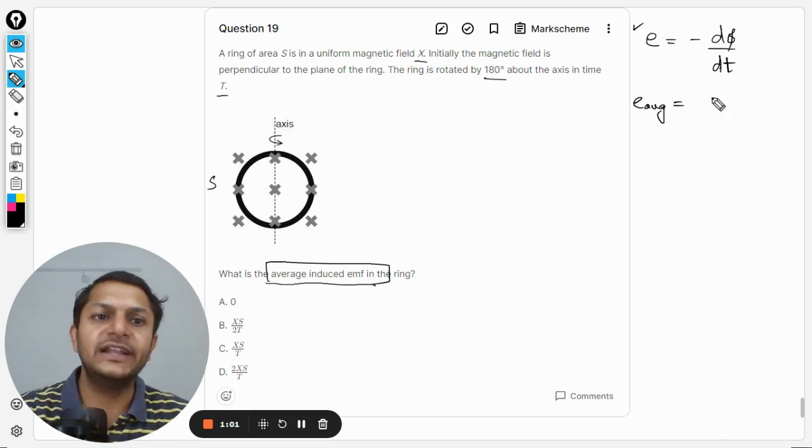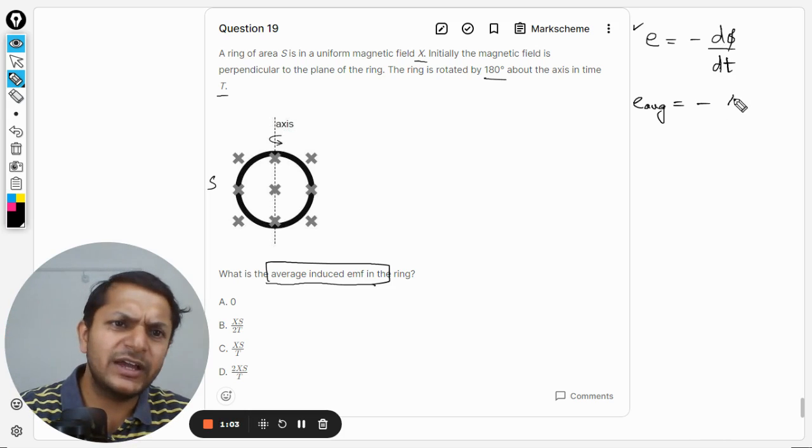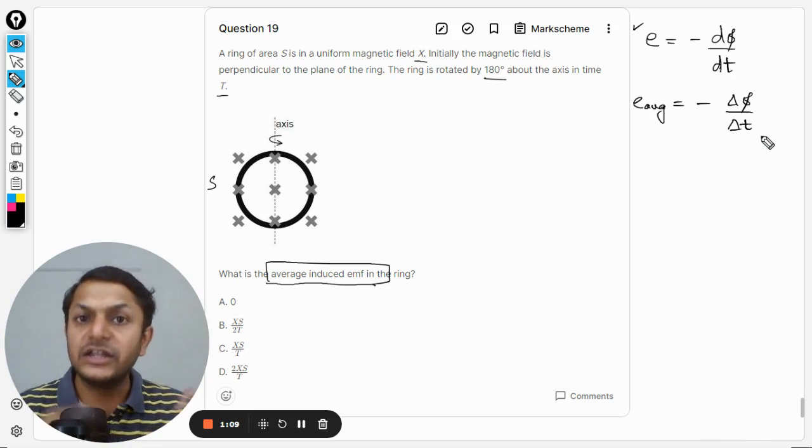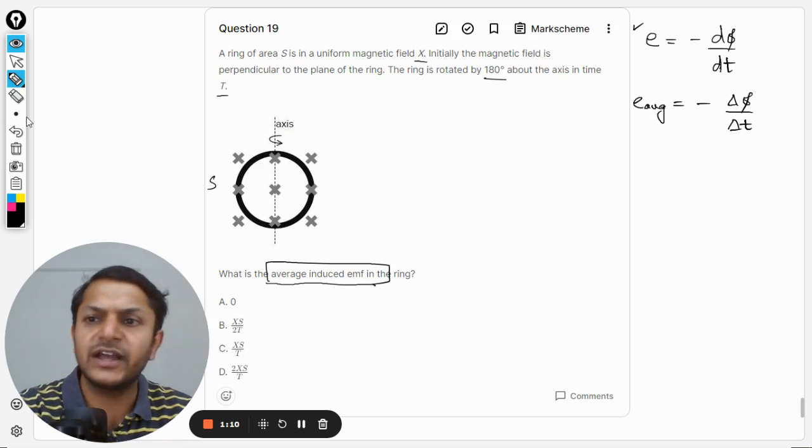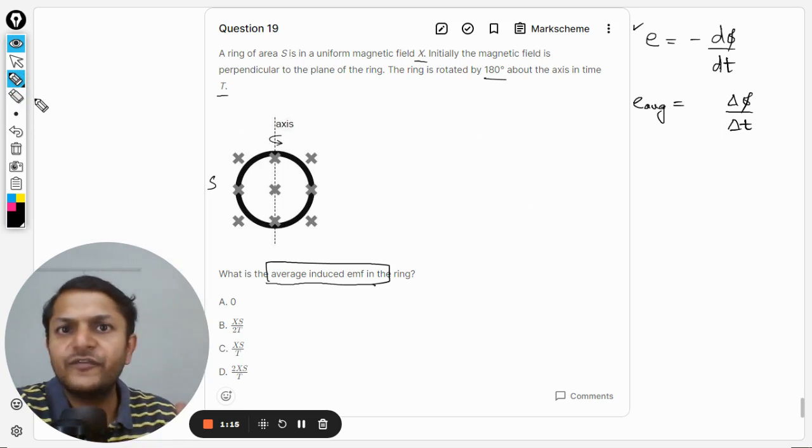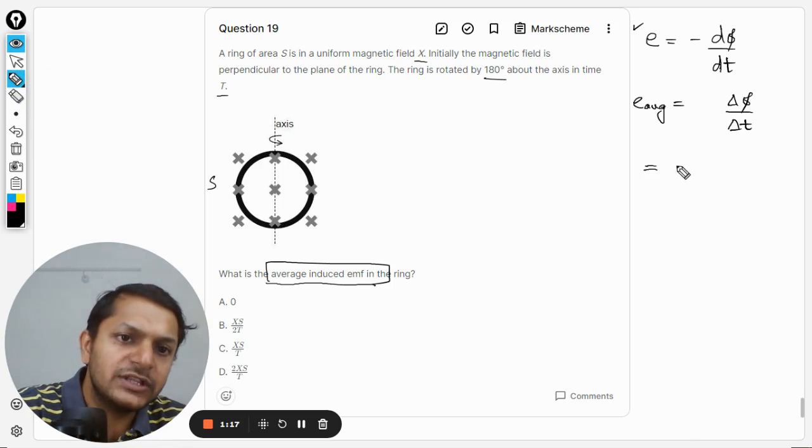So in average, this d is converted into delta. The negative sign we can just get rid of, no problem with that, because anyways we are not interested in the direction of the induced current. So it is just the change in the flux, total change in flux, in total time.